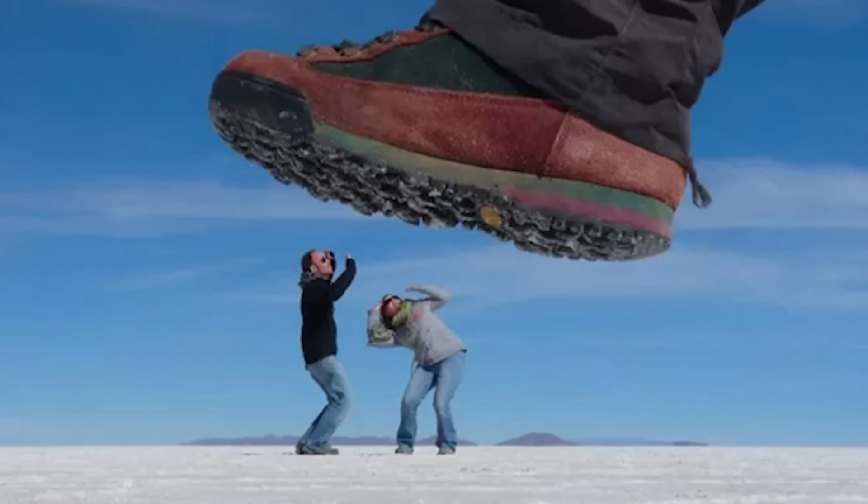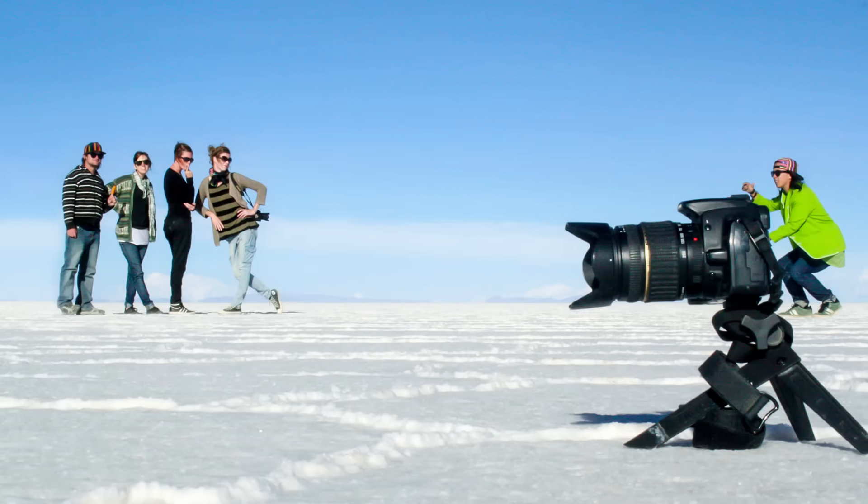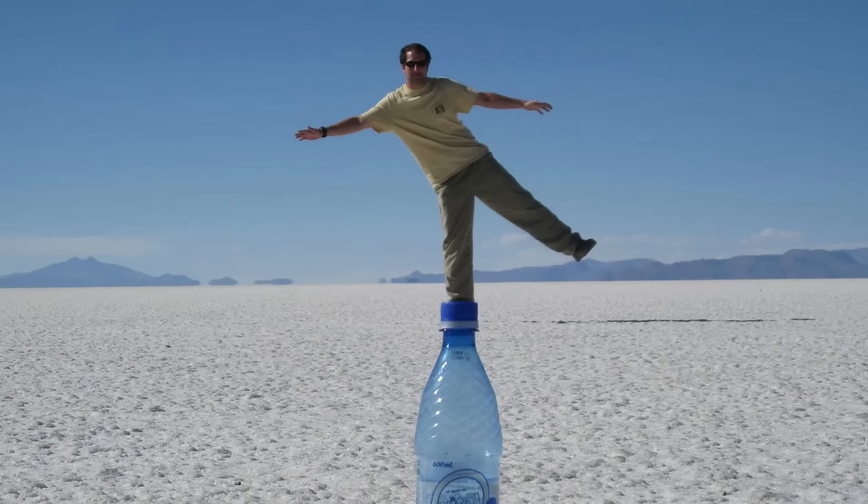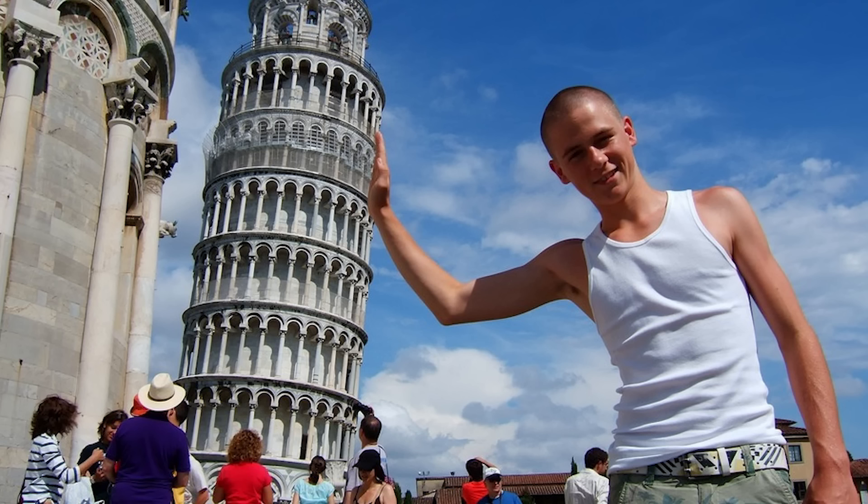Forced Perspective. It's a technique that makes an object appear farther away, closer, larger, or smaller than it really is. Tourists that take a photo of the Tower of Pisa in the famous pose are actually applying this technique.